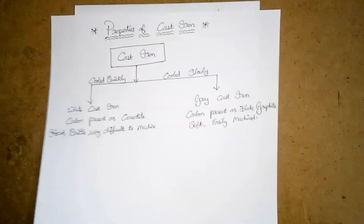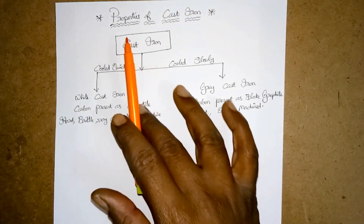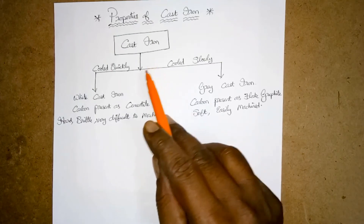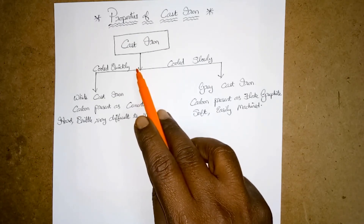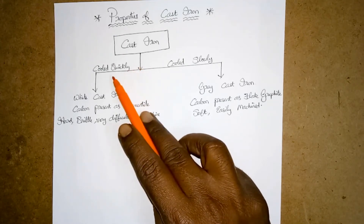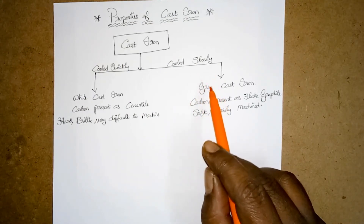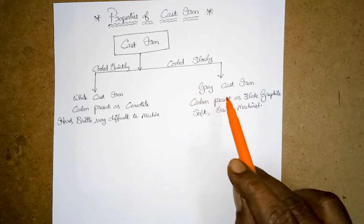Next we will see the properties of cast iron. From the iron-carbon phase diagram we understand that cast iron cooled quickly gives white cast iron, and cast iron cooled slowly gives grey cast iron.